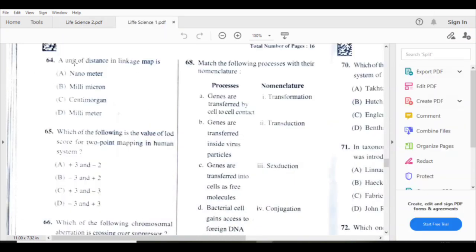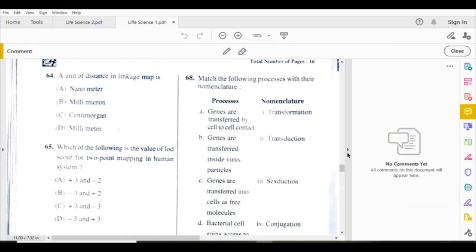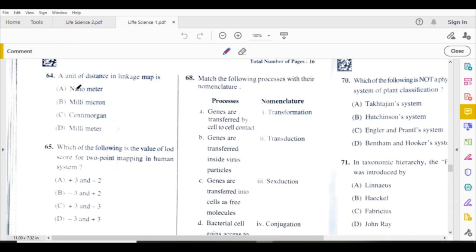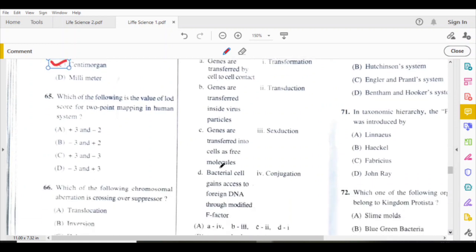64th question: A unit of distance in linkage is centimorgan, C1. Which of the following is the value of LOD score? Here, plus 3 and minus 2.